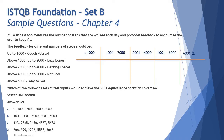Looking at the table, the equivalence classes are: up to 1000 (≤1000), then 1001–2000, then 2001–4000, then 4001–6000, and finally above 6000 (i.e., ≥6001). With these five classes set up, the question asks: 'Which of the following sets of test inputs would achieve the best equivalence partition coverage?' — meaning which option covers the maximum number of partitions.